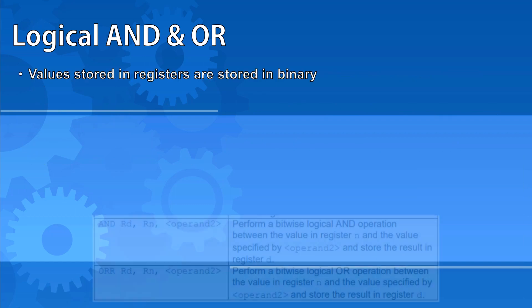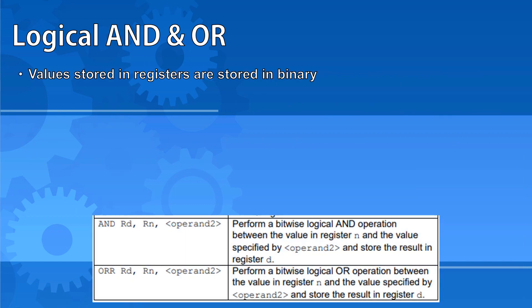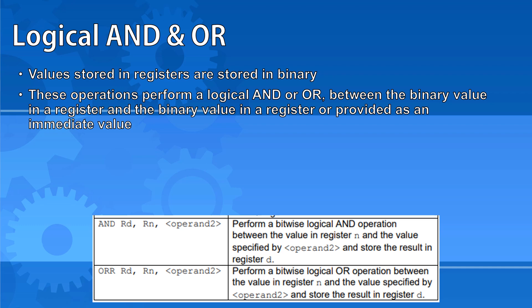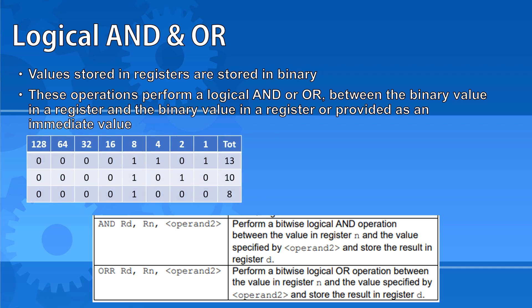The values stored in registers are stored in binary. We're able to use logical AND and OR operations between the binary value in a register, and the binary value in another register, or one that's provided as an immediate value as its binary representation. If we used a logical AND with a register that contained the value 13 and another register that contained the value 10, then the result would give us a 1 only in those positions where both of the inputs had a 1. You can see the result here.